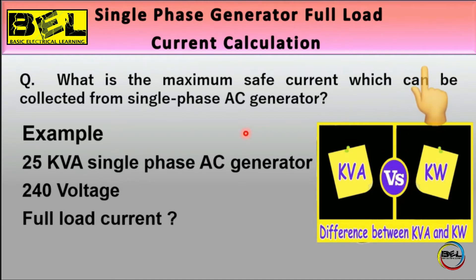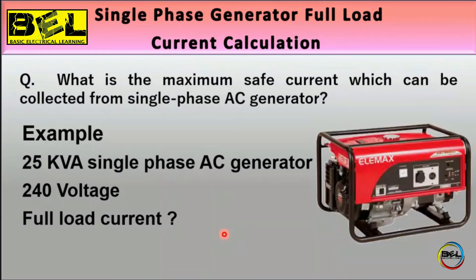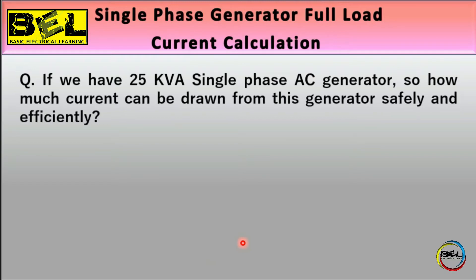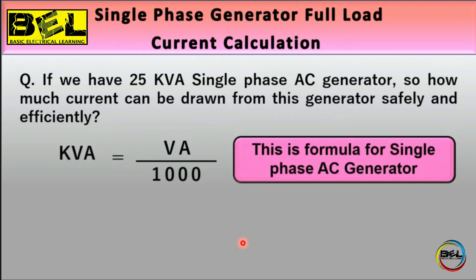A link is available for a detailed explanation of the difference between kVA and watt. Now, coming to our topic: the AC generator has 25 kVA power and 240 V AC voltage supply. The question is — for a 25 kVA single phase AC generator, how much current can be drawn safely and efficiently?